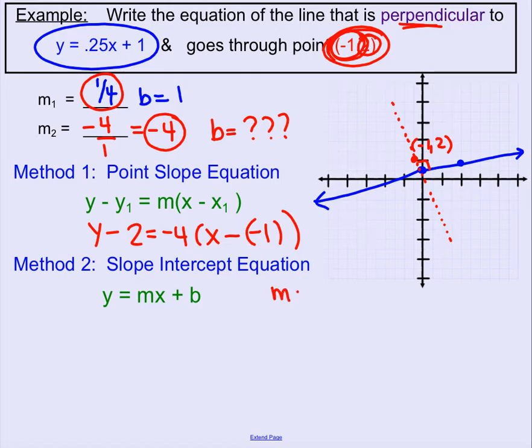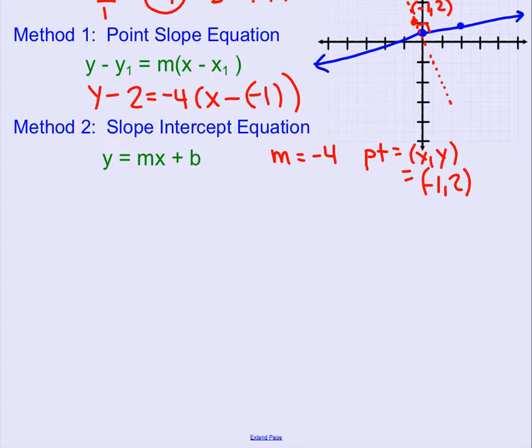You have to know the slope, which is negative 4, and you need to know a point, x, y, which we know, given to us as negative 1 comma 2. So we substitute those three things into the equation.